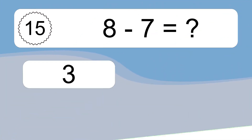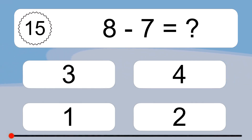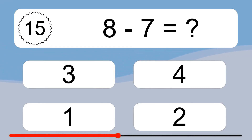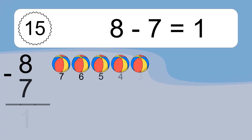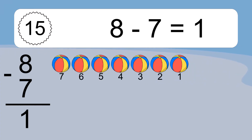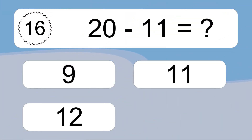8 minus 7 equals what? 8 minus 7 equals 1. Let's count it. 7, 6, 5, 4, 3, 2, 1.